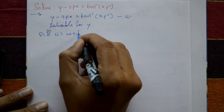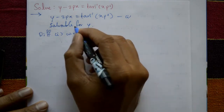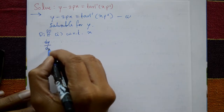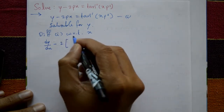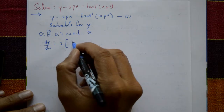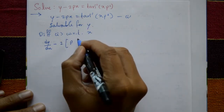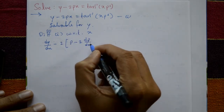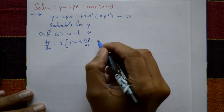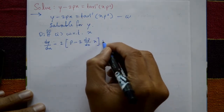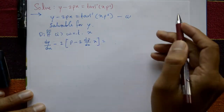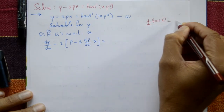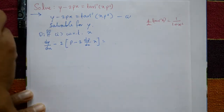Since it is solvable for y only, we differentiate equation number one with respect to x. dy/dx gives p. Using the product rule on 2px: differentiate x gives 1, so we get minus 2p, and differentiating p gives dp/dx, so minus 2x dp/dx. This equals the derivative of tan inverse of xp squared.